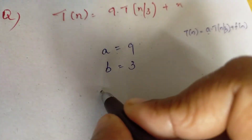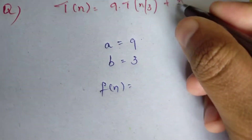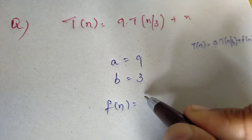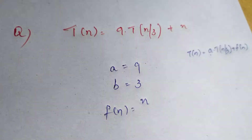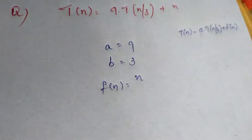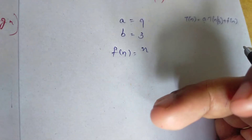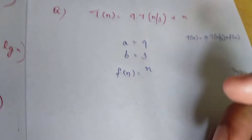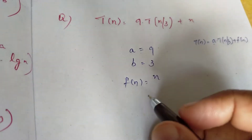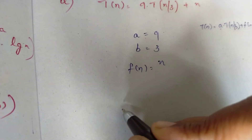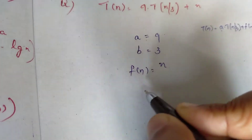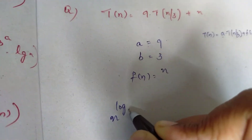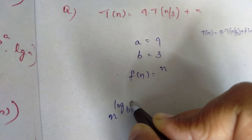f of n is equal to n. So, if we ask the reference, how to compare f of n equal to n.